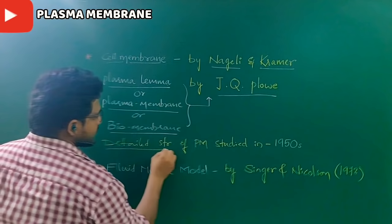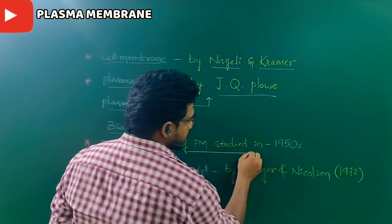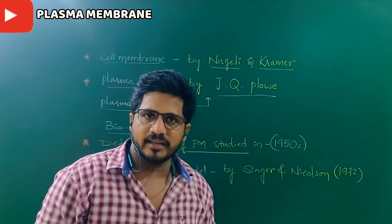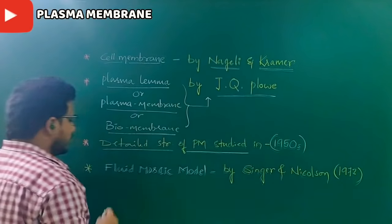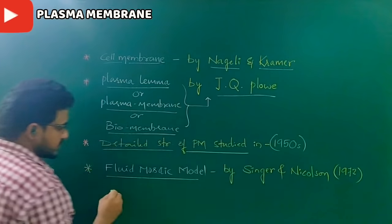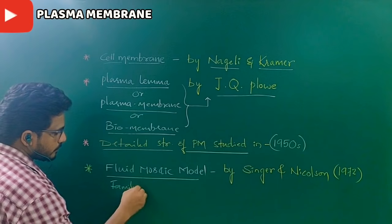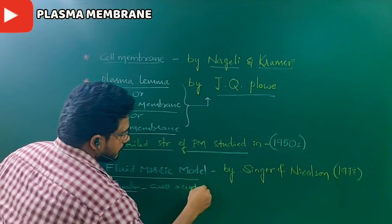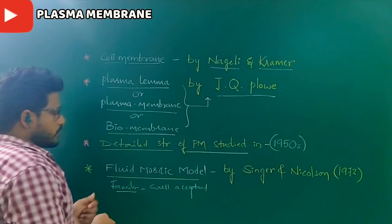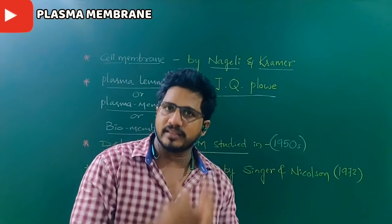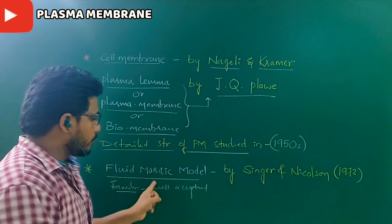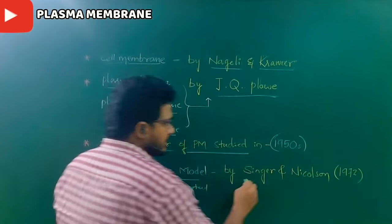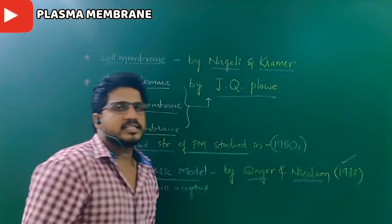The detailed cell structure of the plasma membrane was studied after the invention of microscopes in the 1950s. The fluid mosaic model is the most familiar and well-accepted cell membrane theory till today, also called the fluid mosaic model. It was given by Singer and Nicholson in 1972.